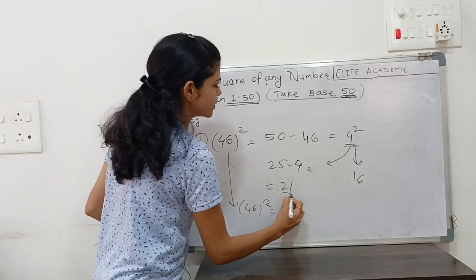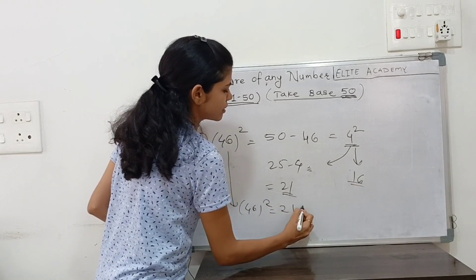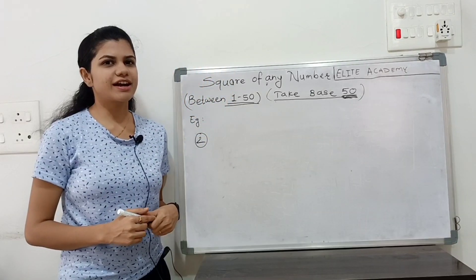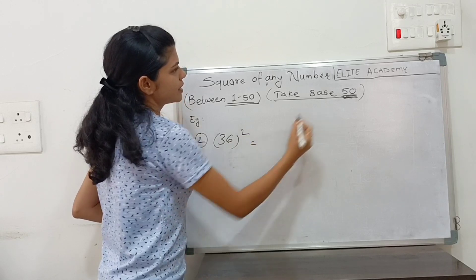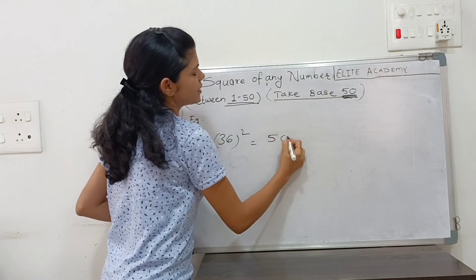Therefore, the answer for 46 squared is 2116. Let's take another example. Suppose we have to find the square of 36. Take base 50. 50 minus 36, answer is 14.